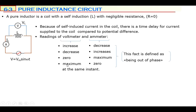As the voltmeter reads maximum, the ammeter reads zero. As the voltmeter reads zero, the ammeter reads maximum. As the voltmeter reading increases, the ammeter reading decreases. Or as the voltmeter decreases, the ammeter increases. They change oppositely in a coil.